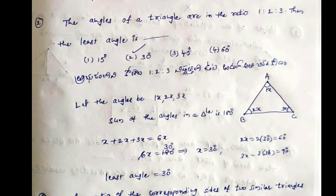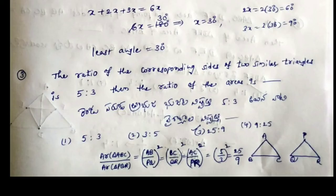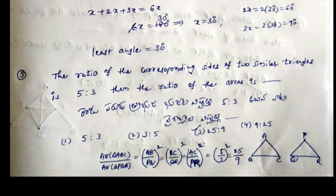90 degrees. The next third question: the ratio of the corresponding sides of two similar triangles is 5 to 3, then the ratio of the areas is dash. Two similar triangles are in the ratio 5 to 3. The ratio of areas is given by AB by PQ, BC by QR, and AC by PR, which equals 5 by 3.